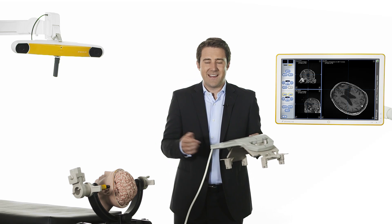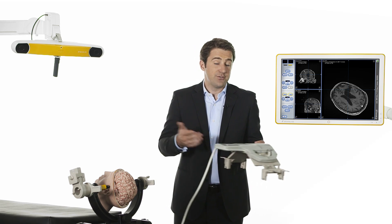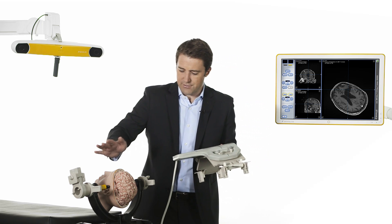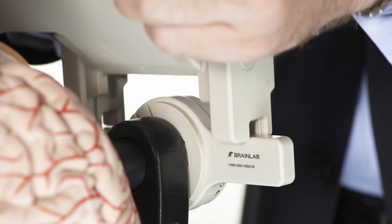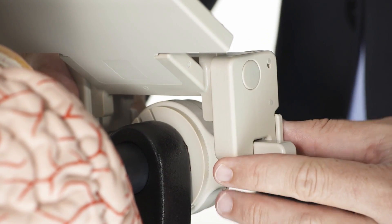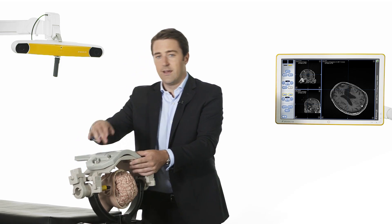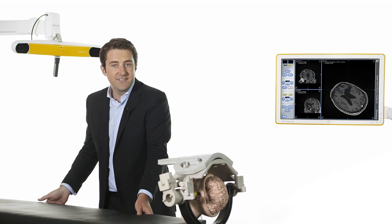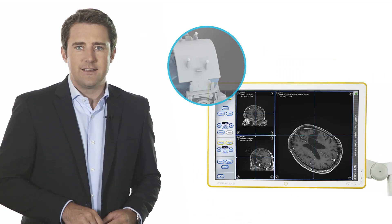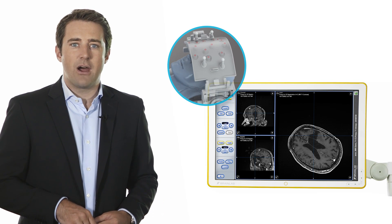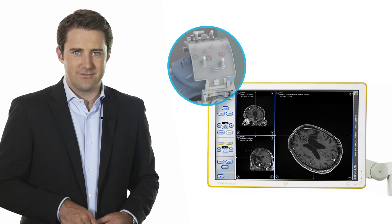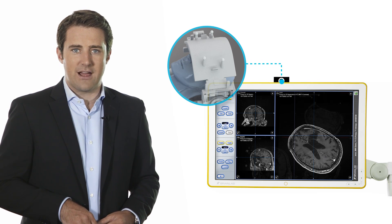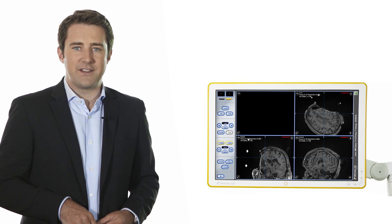To update anatomical data during the procedure in order to assess brain shift or for resection control, the surgical field is draped and the matrix is mounted to the headholder. Shuttle systems ensure smooth patient transport from the OR table to the scanner. Images are acquired with the MR markers included in the scanner's field of view. Immediately after the scan, data is automatically transferred to either a ceiling mounted or mobile navigation system.